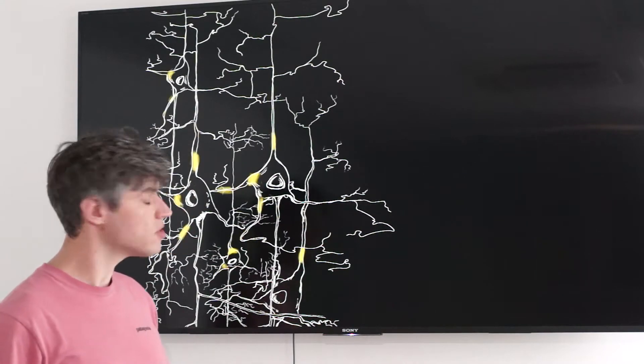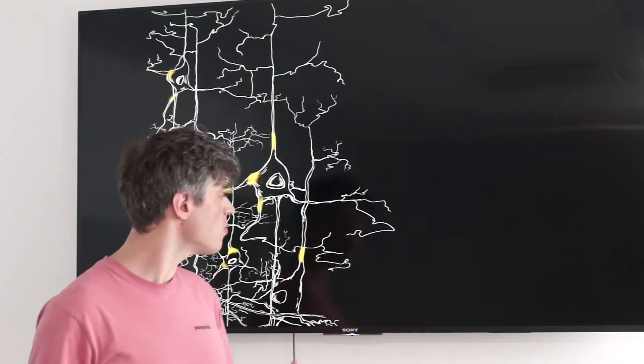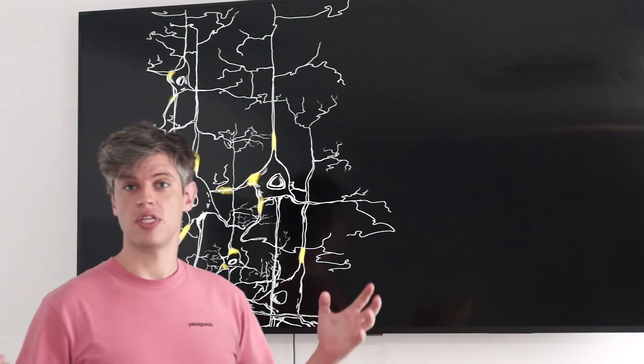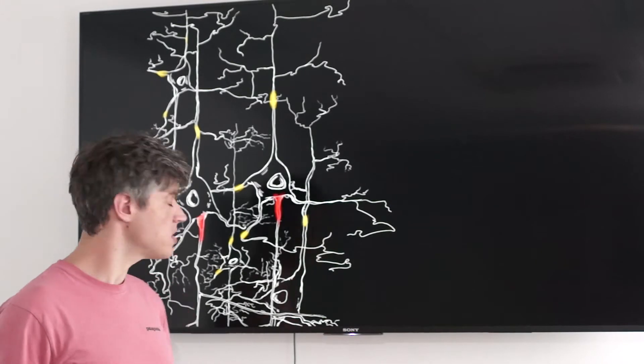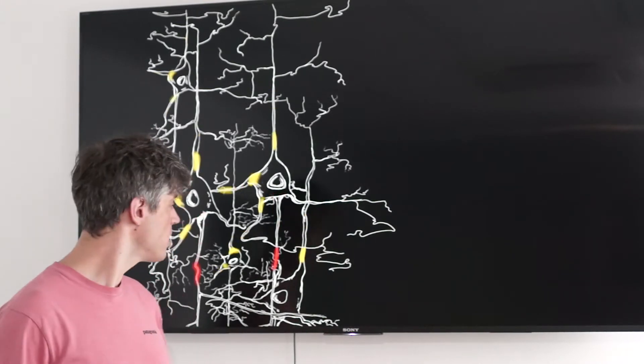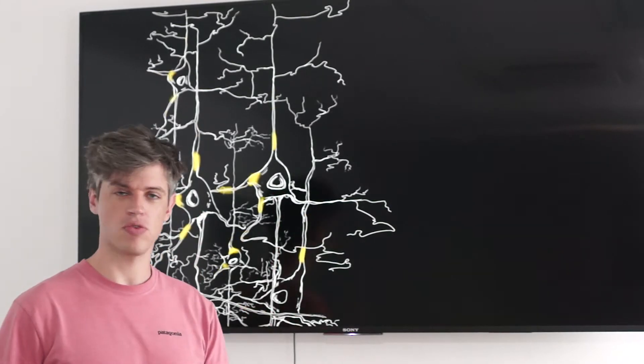Those neurons receive inputs from other regions of the brain, from other neurons. If the inputs arrive at concomitant events with the proper strength, they can activate a neuron that will generate an action potential to transmit the information to the next neuron.